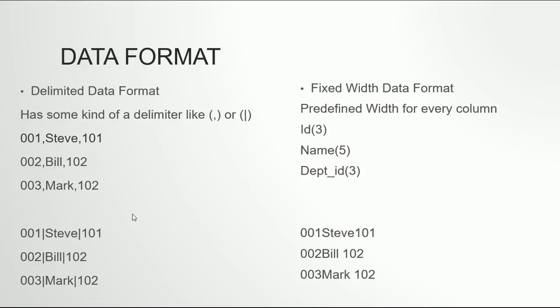The second format is the fixed-width data format, which is not as easy or flexible to use. In fixed-width format, you assign a specific number of characters to each column — for example, the ID will be 3 characters, the name will be 5 characters, and the department ID will be 3 characters. So the first through third characters go to the first column, characters four through eight go to the second column, and the last three go to the third column. When we look at the actual example, we'll see how to give positions like 'from position 4 to 6 is this column'.